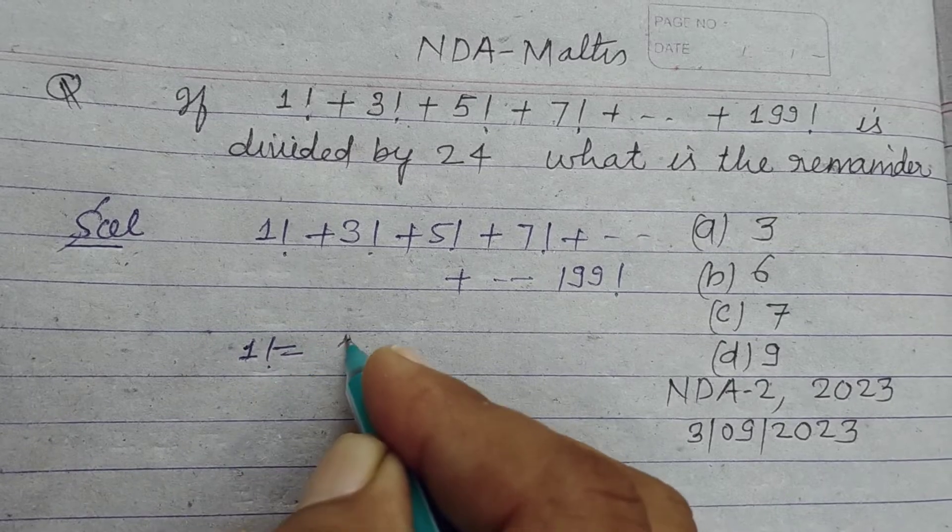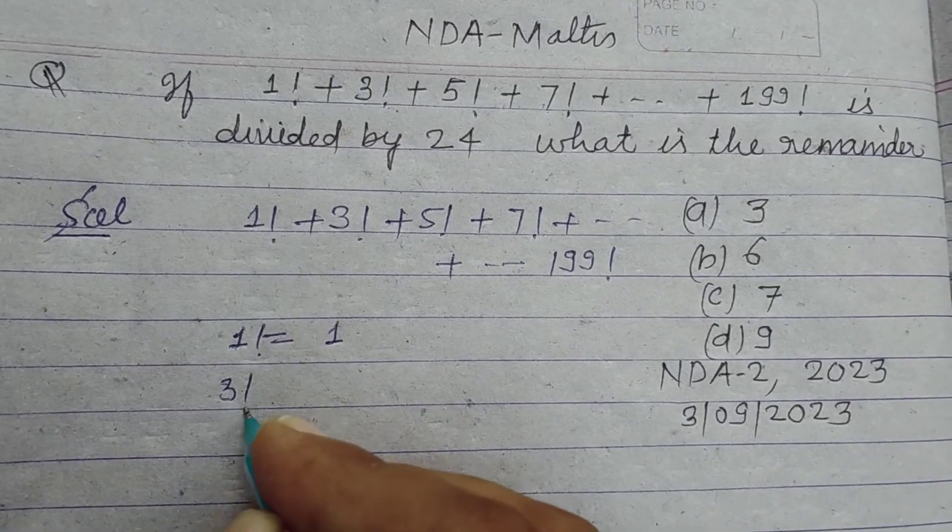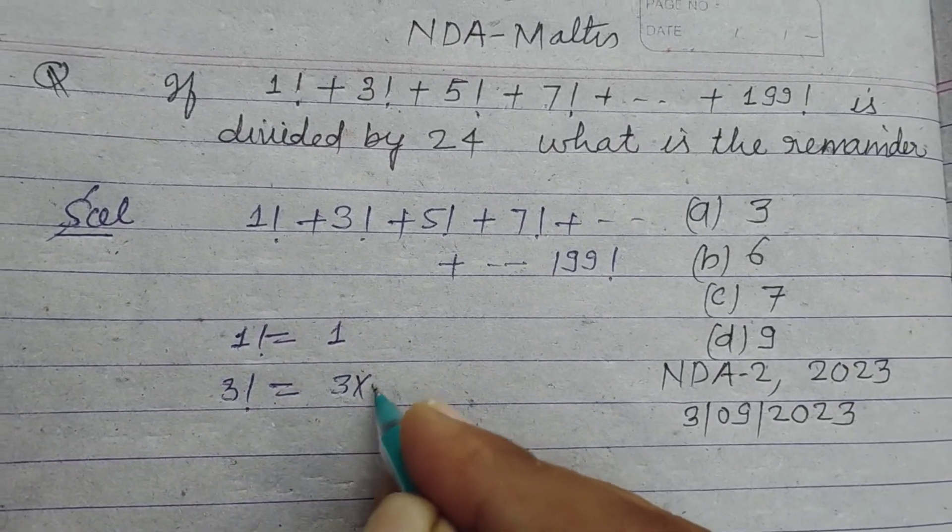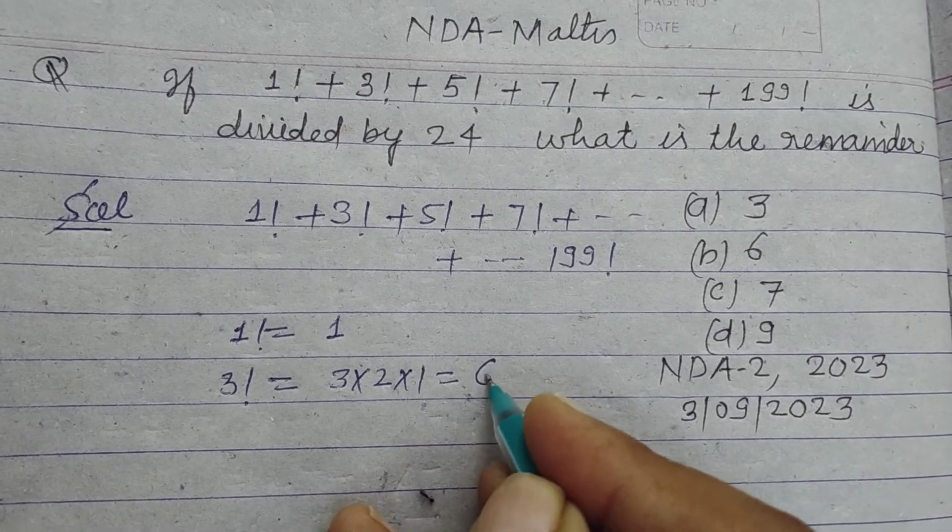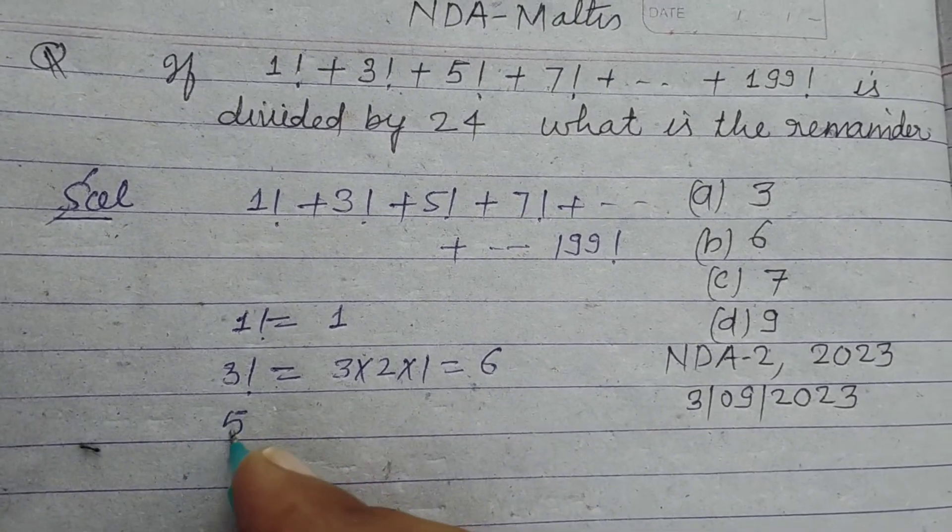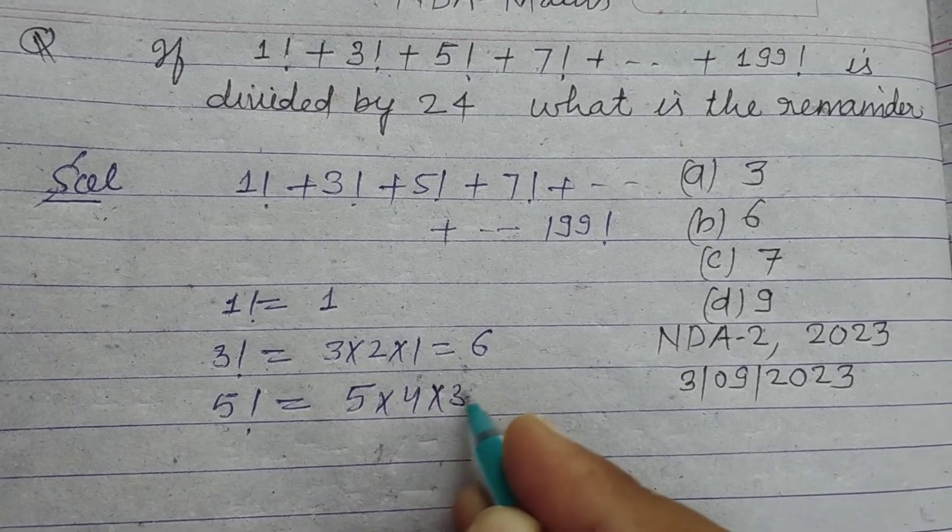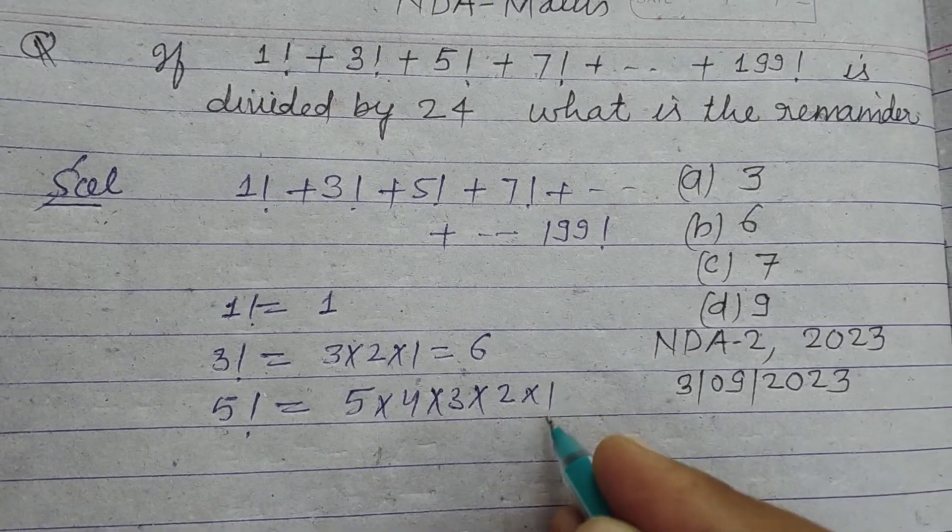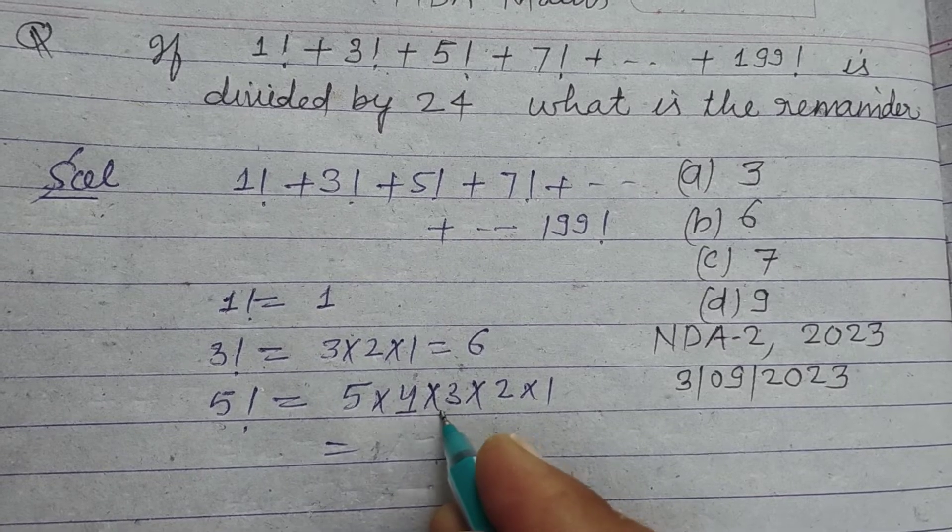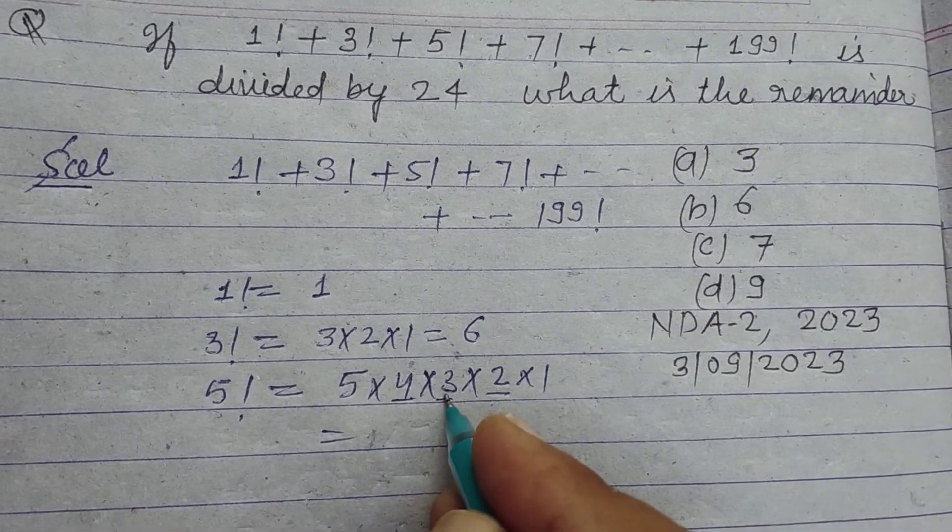Factorial 1 is 1. Factorial 3 is 3 into 2 into 1, so this is 6. Factorial 5 we take 5 into 4 into 3 into 2 into 1, so here 4, 3, 2, 4, 3 are 12, 12 to your 24 is available after factorial...